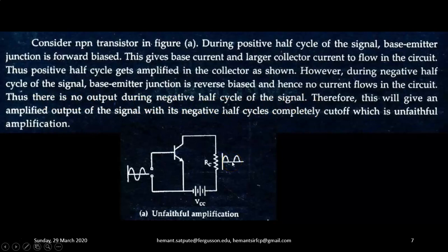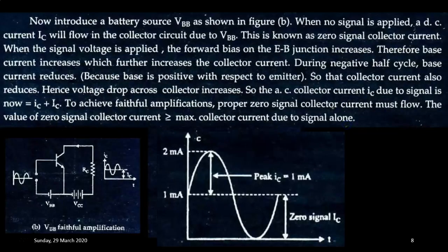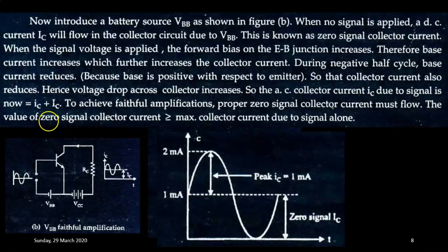Therefore, this gives an amplified output of the signal with its negative half cycle completely cut off, which is unfaithful amplification. To correct this, introduce a battery source VBB as shown in figure B. When no signal is applied, a DC current IC will flow in the collector circuit due to this VBB. This is known as zero signal collector current.